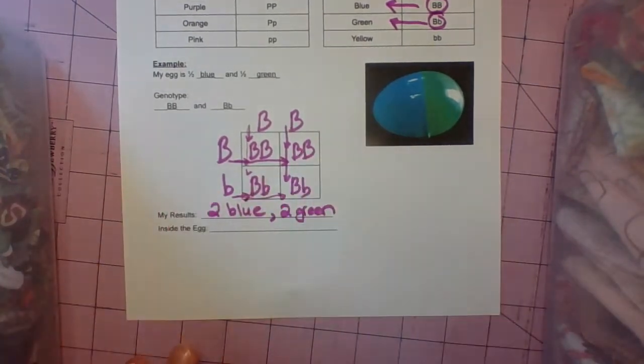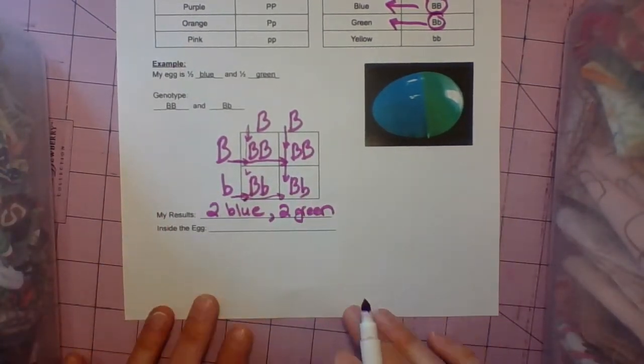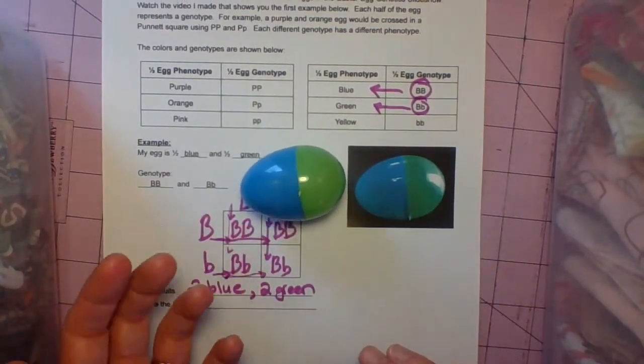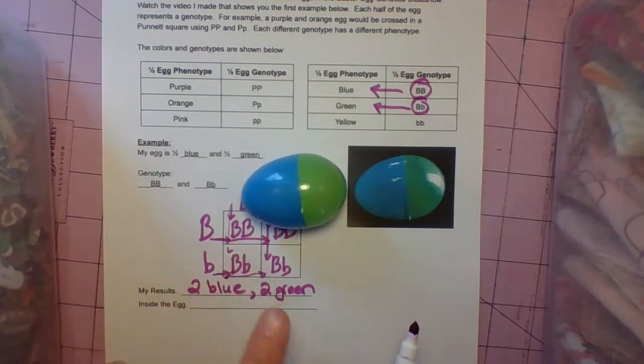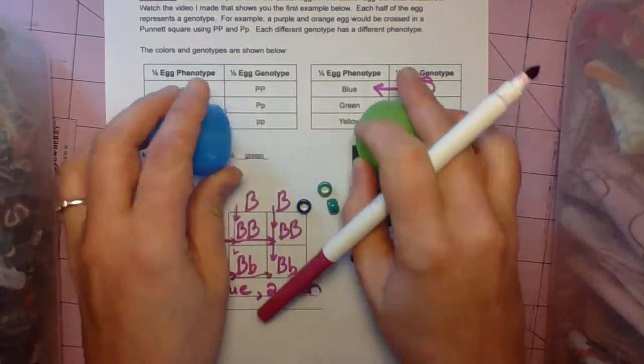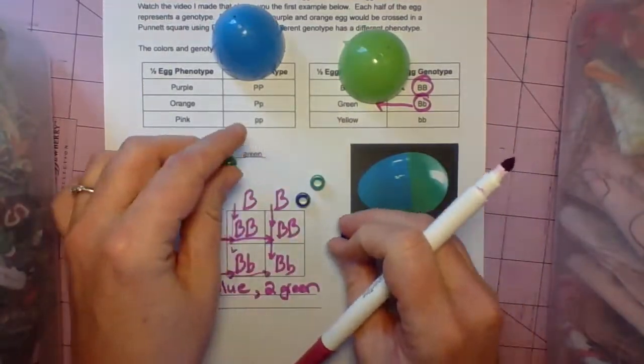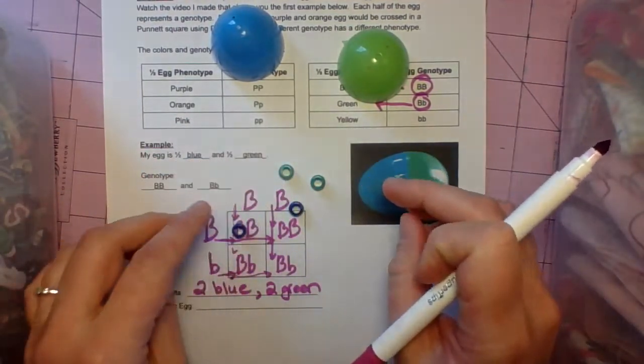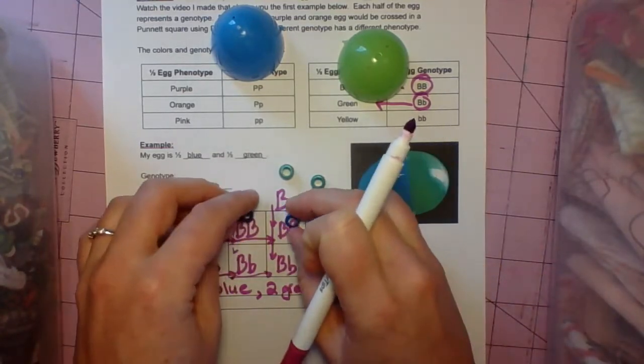You would type that in to this document. And then you look inside the egg. I have the egg here. You don't have the actual eggs, but there's a picture of the results in that slideshow. So make sure you check. When I open this, indeed, there are two blue and two green.